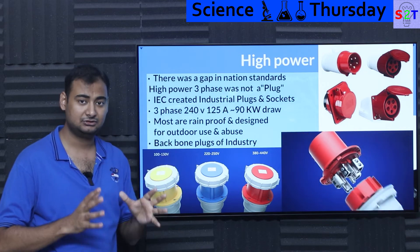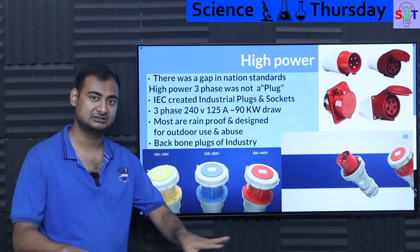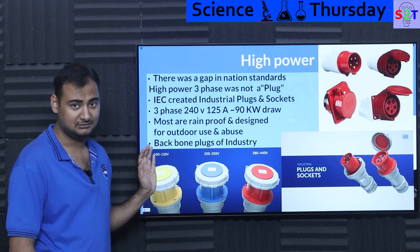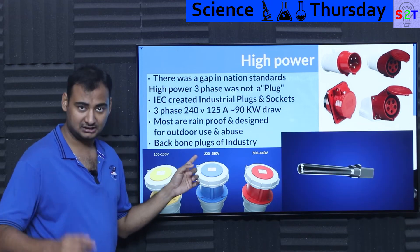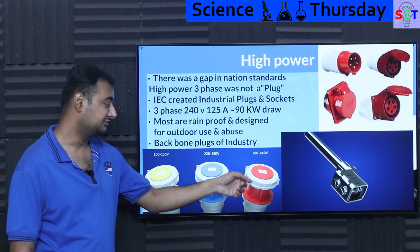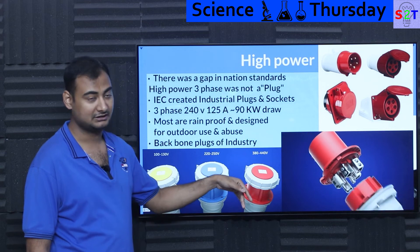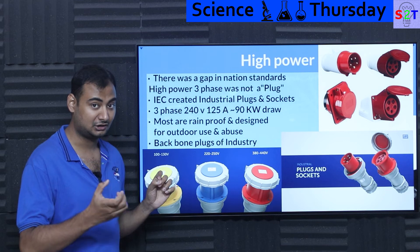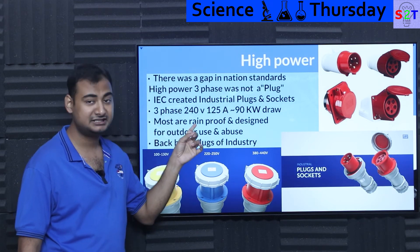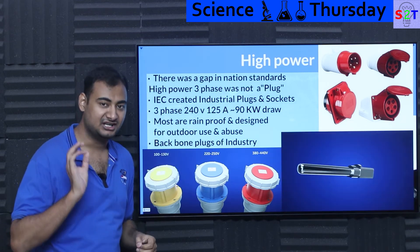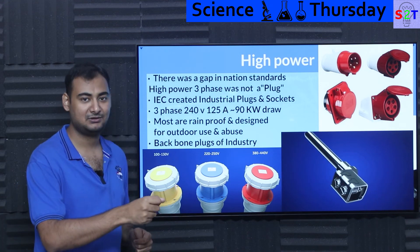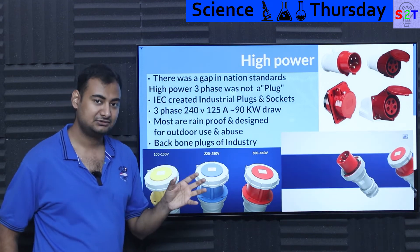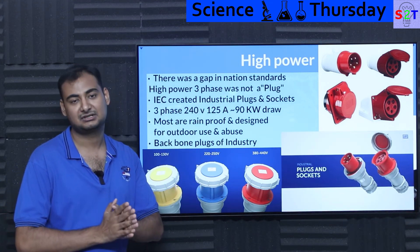This gap gave the IEC a very good opportunity to standardize high-power three-phase connectors across the planet. The color coding is: yellow for below 130 volts, blue for single-phase 220–250 volts, and red for 380–440 volts three-phase. At maximum capacity, the largest connectors support 240 volts at 125 amps — roughly 90 kilowatts — meaning you can plug in and out an entire generator's worth of power.